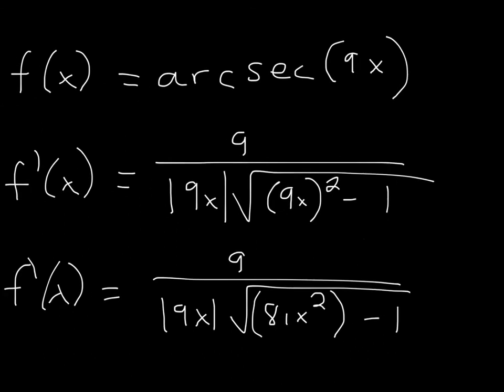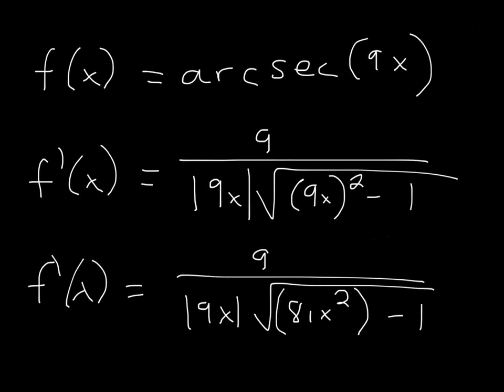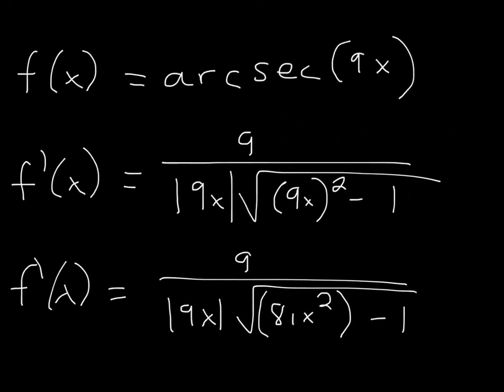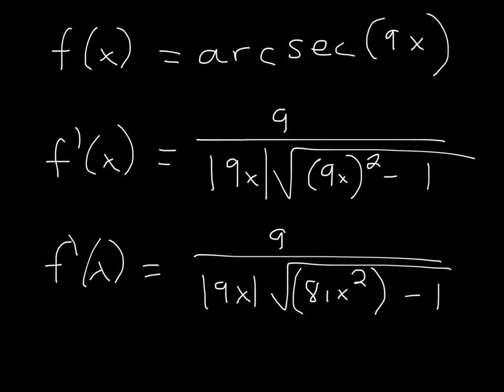All I did was plug in the values. So u prime, which goes in the numerator, is 9. The absolute value of u is 9x, and then 9x squared, as in the formula, minus 1 under the square root.